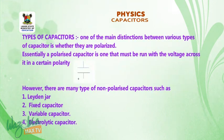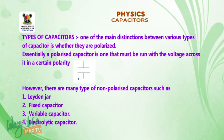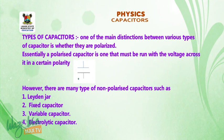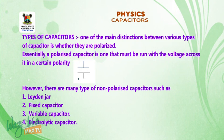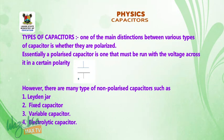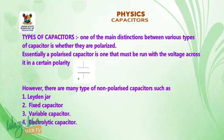Types of capacitor. One of the main distinctions between various types of capacitors is whether they are polarized. Essentially, a polarized capacitor is one that must run with the voltage across it in a certain polarity, as shown in the diagram below. However, there are many types of non-polarized capacitors such as Leyden jar, fixed capacitor, variable capacitor, and electrolytic capacitor, and so on.